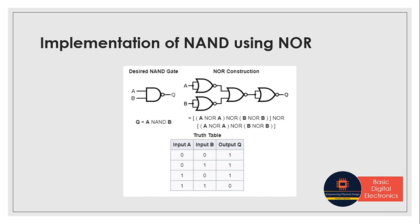Next we will see how to implement NAND gate using NOR gate. We know that NAND means AND followed by a NOT. From the previous slide, AND gate is two NOR gates followed by a NOR gate, and NOT means joining the inputs of a NOR gate. So for NAND gate construction: two NOR gates followed by a NOR, and then followed by another NOR with joined inputs, gives us the NAND functionality.